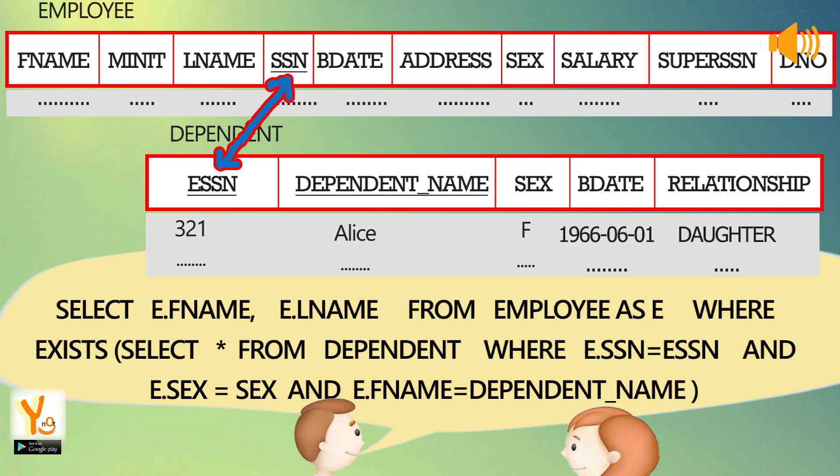Retrieve the names of employees who have dependents that share the same name and sex. SELECT E.Fname, E.Lname FROM employee AS E WHERE EXISTS (SELECT * FROM dependent WHERE E.SSN = ESSN AND E.sex = sex AND E.Fname = dependent_name).